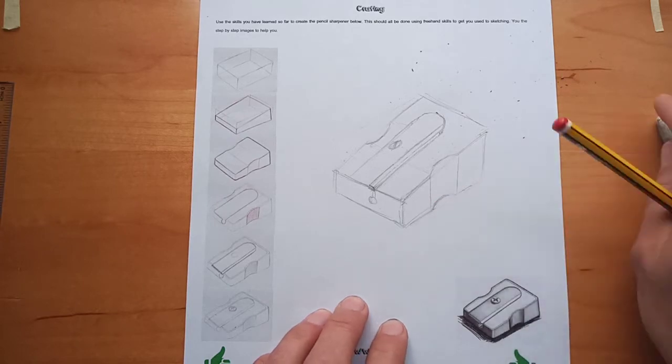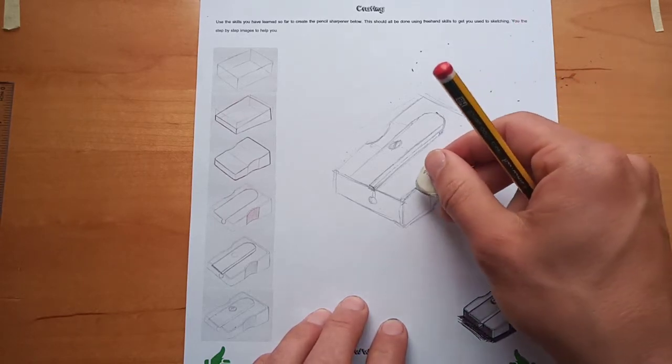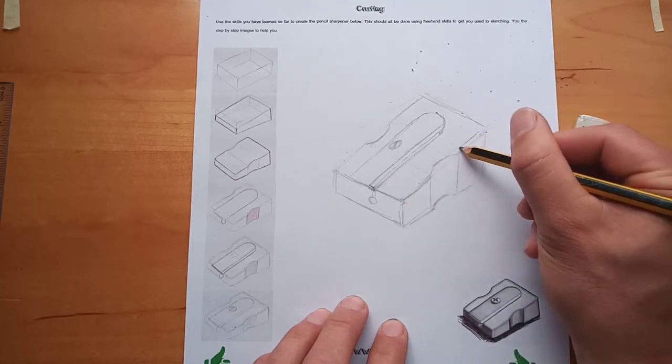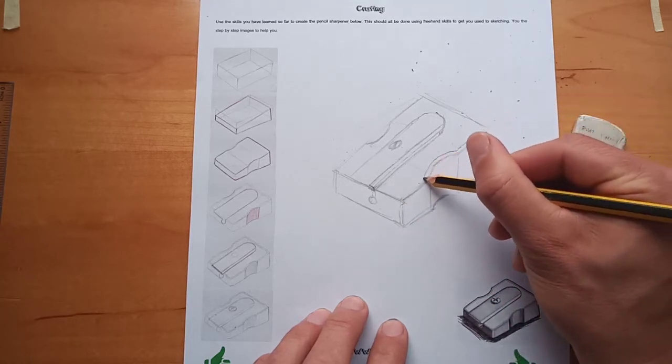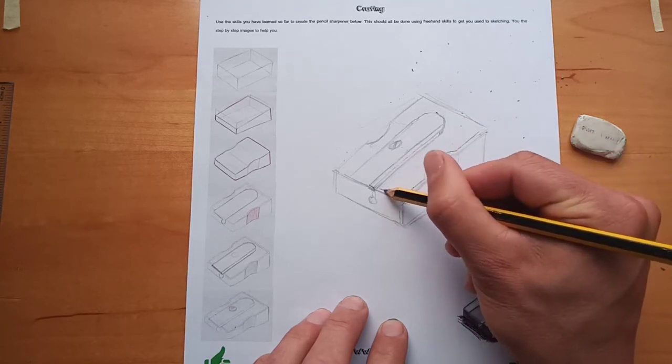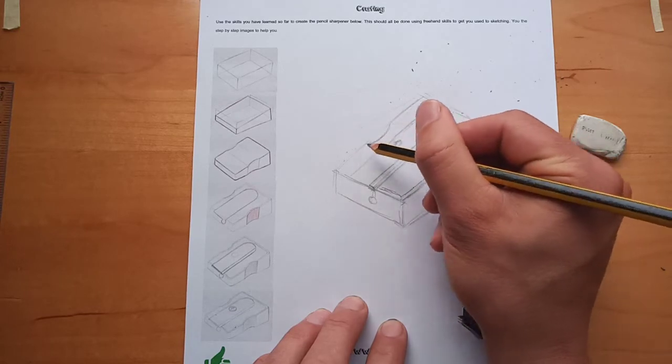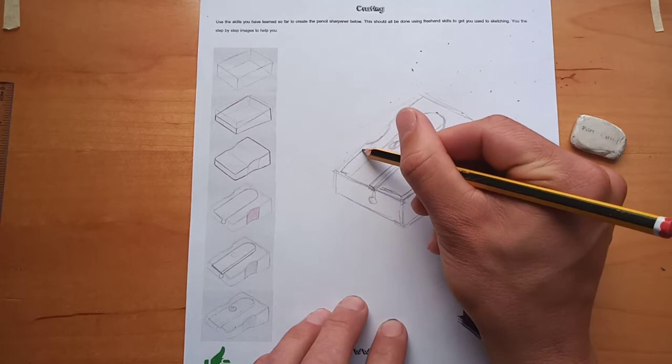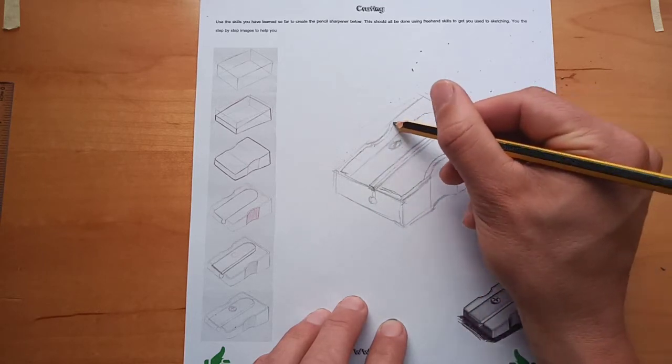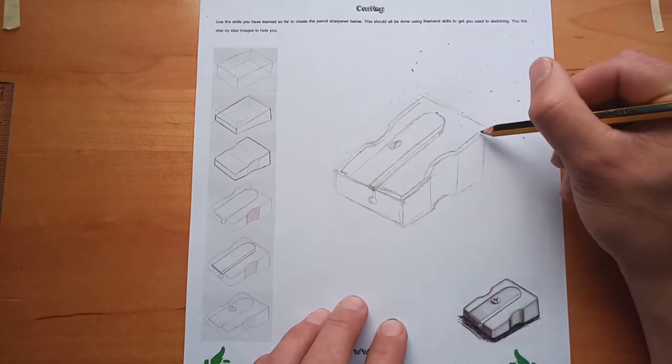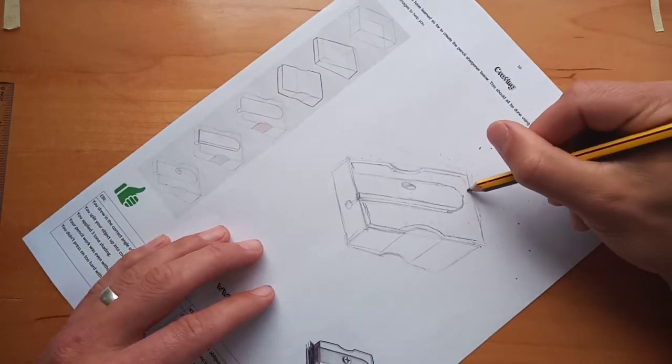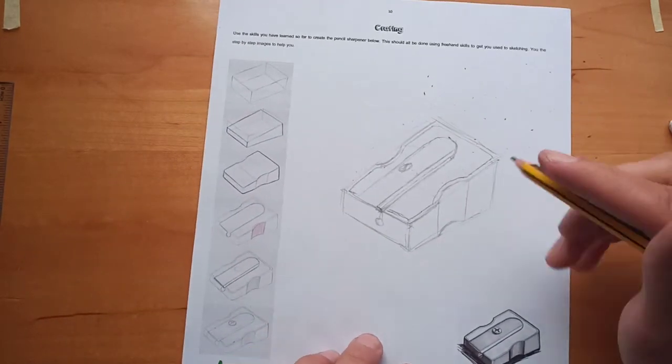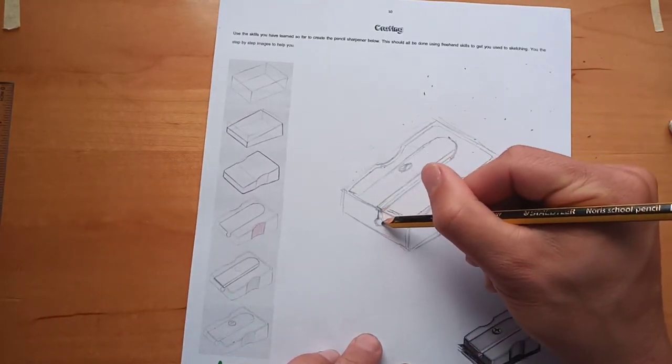And then, if you want to put an internal section running around the edge of it, you can do. And it's basically just tracking the profile running around the edge of it. So, that's giving us a start point there. I'm neating that up a little bit around that.